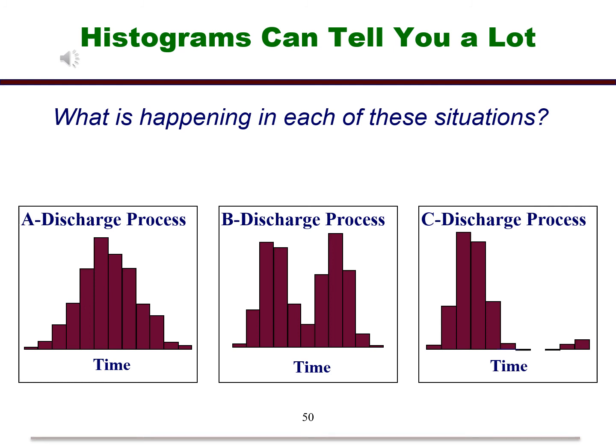For the second plot, the distribution seems to be bimodal. This could be caused by maybe two peak times for discharge. And finally, the third graph gives somewhat of a symmetric distribution, but with some data that we might consider outliers.